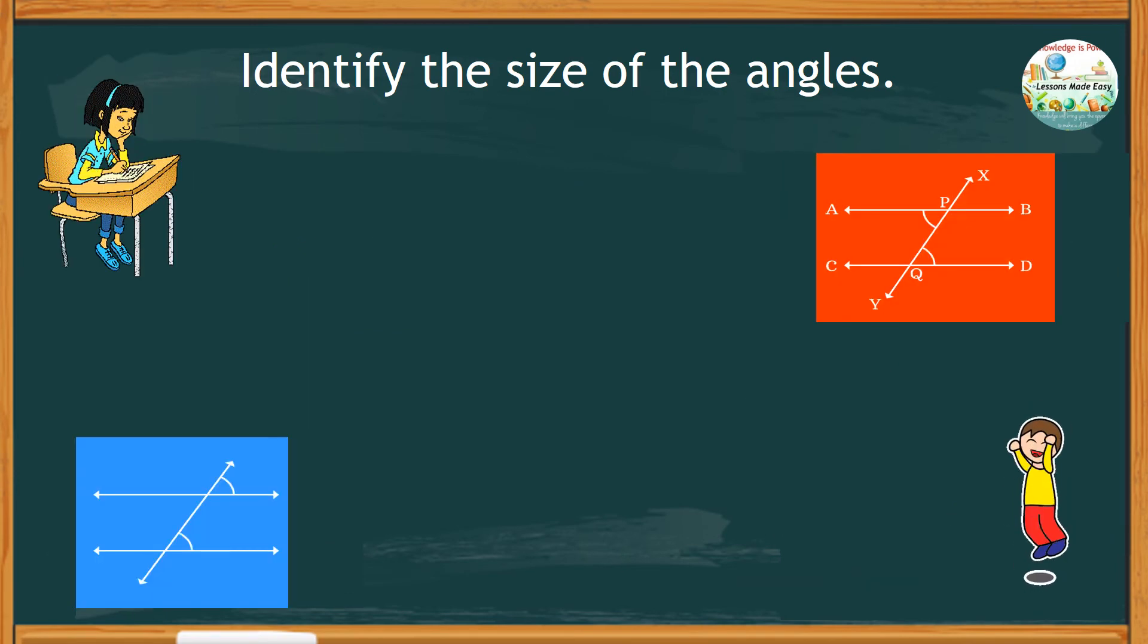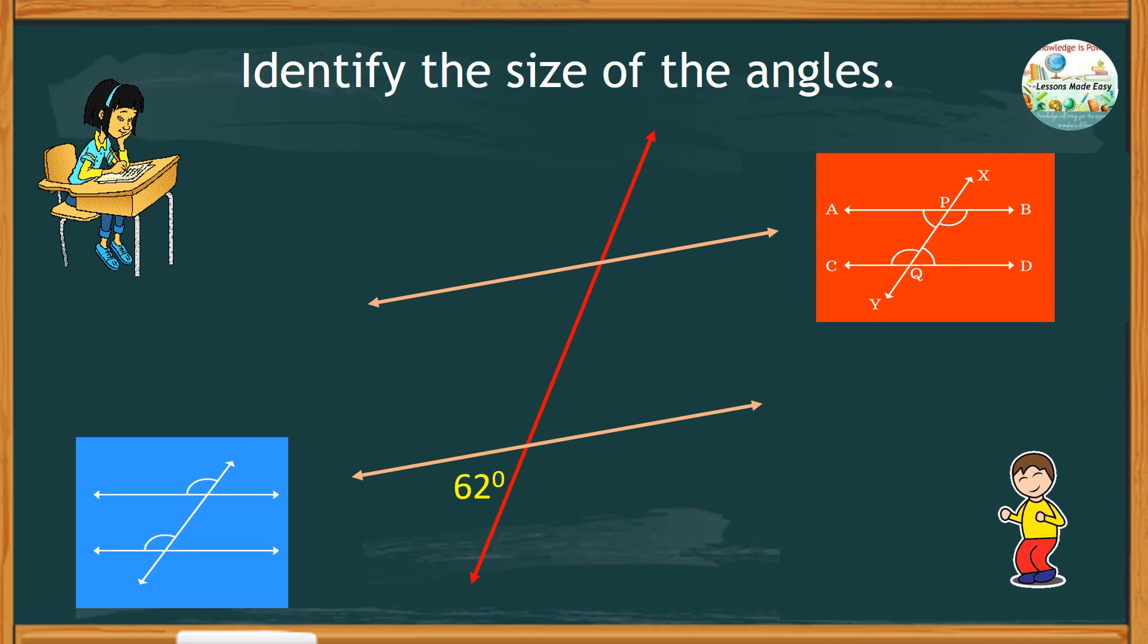And lastly, complete the size of the remaining angles if one angle is 62 degrees. Take your time, and you may pause this video if you need to. But if you're ready, let's go ahead and see what the figure with measurements would look like.